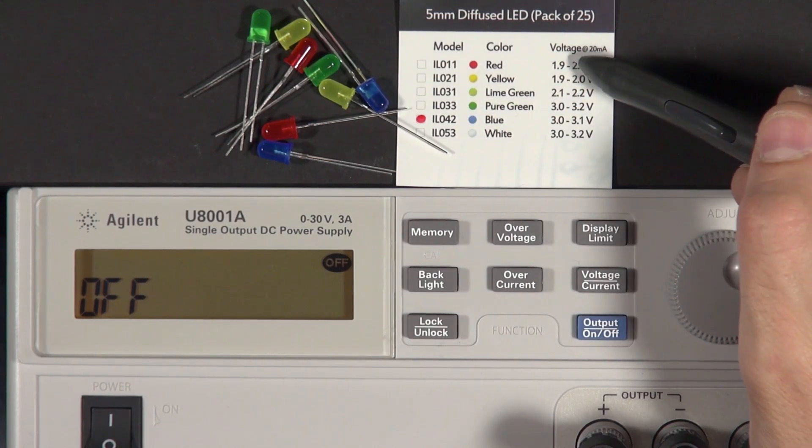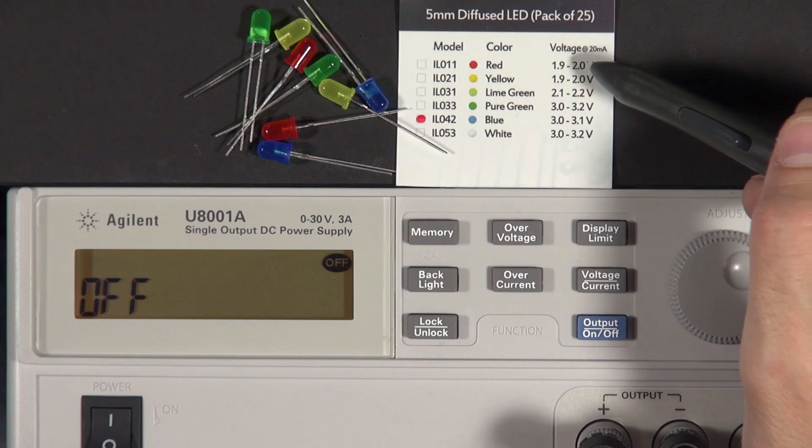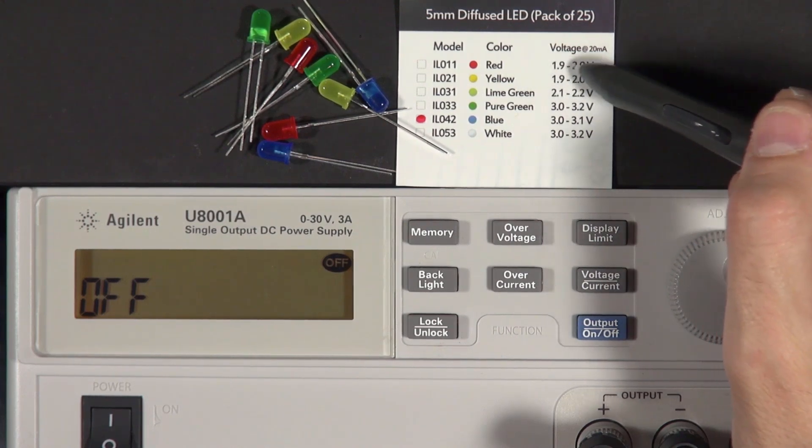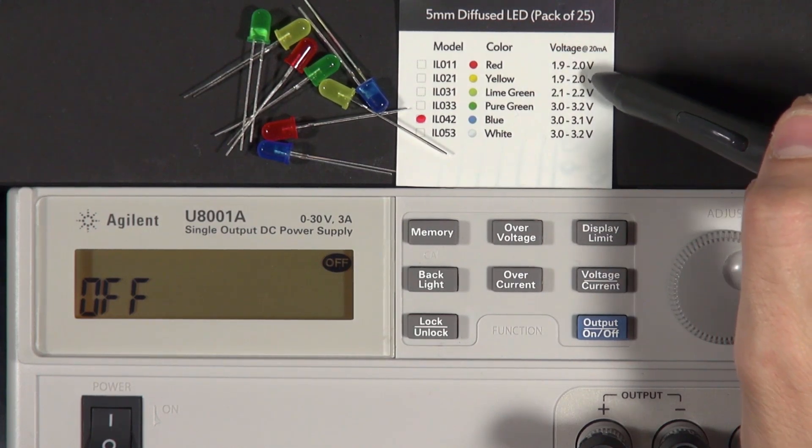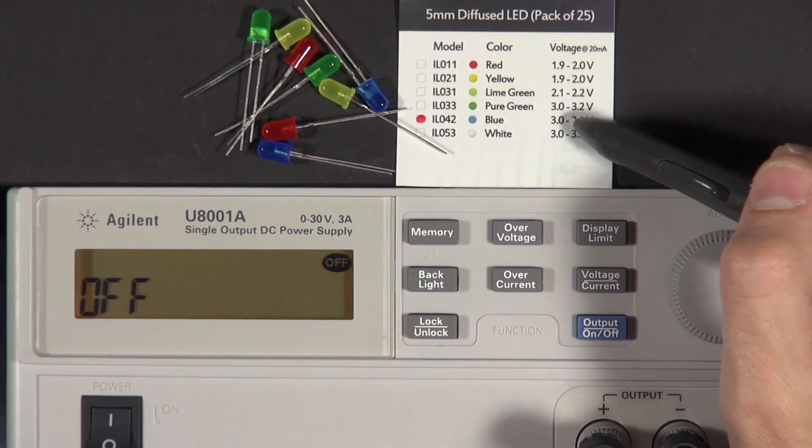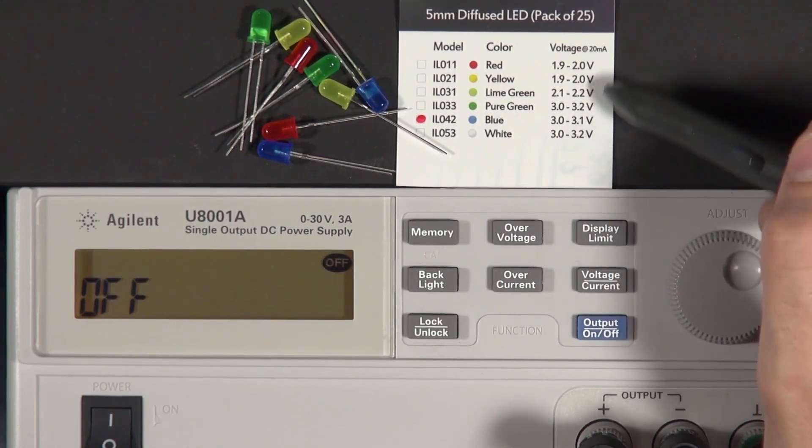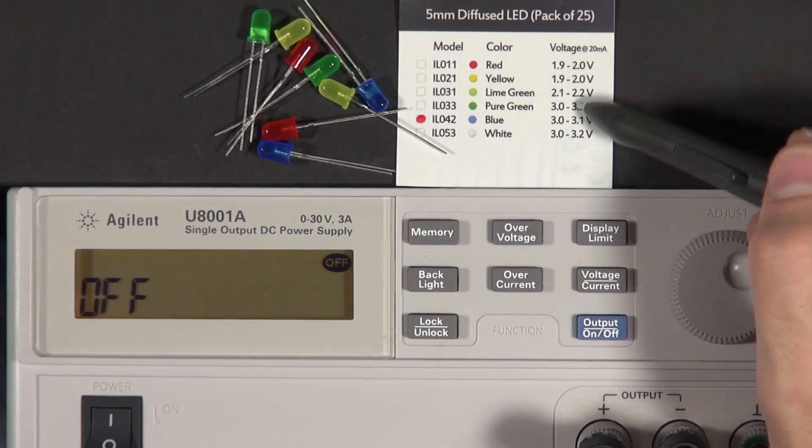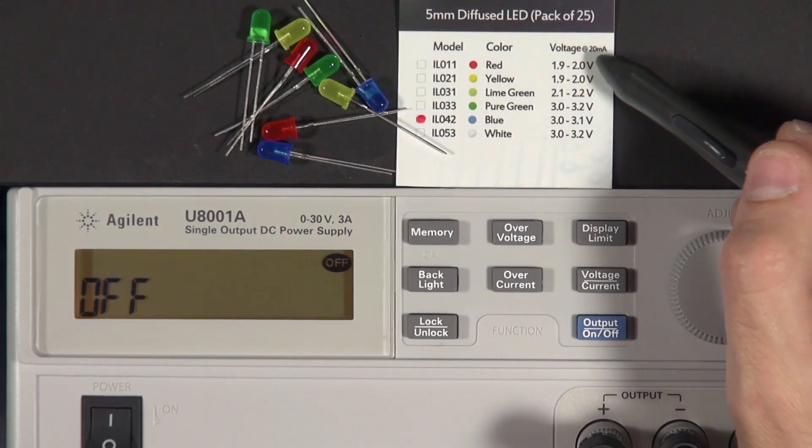And what you can see is here it says voltage at 20 milliamps. And for the red LEDs, it's 1.9 to 2 volts. And then it varies depending on the color. The blue LEDs, for example, want 3 volts to 3.1 volts. So depending on what color we're using here, we might need a different voltage. And all of these are at 20 milliamps.